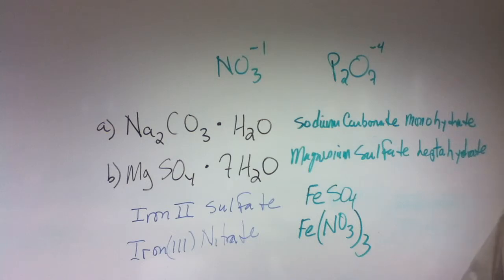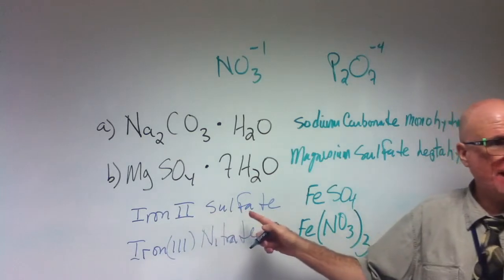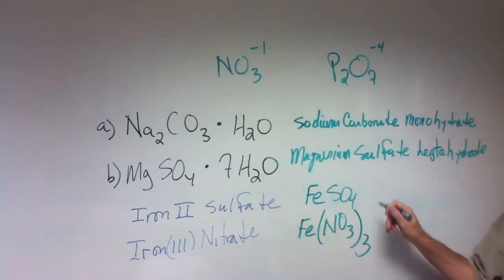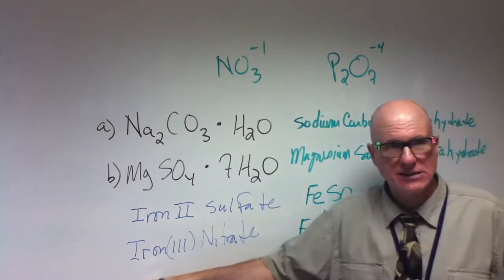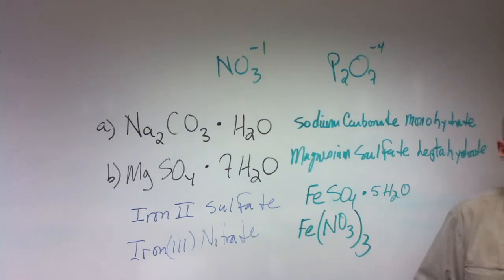Now, let's say this was iron two sulfate pentahydrate. What would you put? Iron two, iron three, two, five, H2O. And let's say this was iron three nitrate octahydrate. H2O.